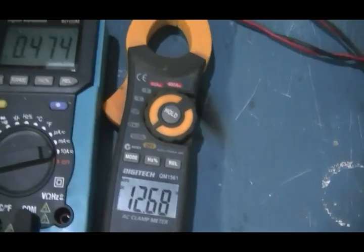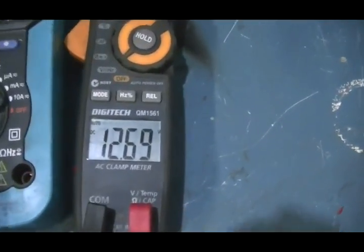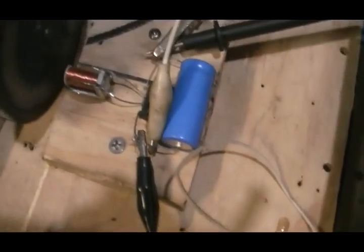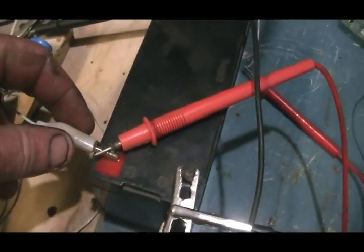Two things are going to happen if our machine is over unity. Our theory is that that voltage should drop when we disconnect the machine, and the machine should continue to run on the generator itself. We will now disconnect our battery.